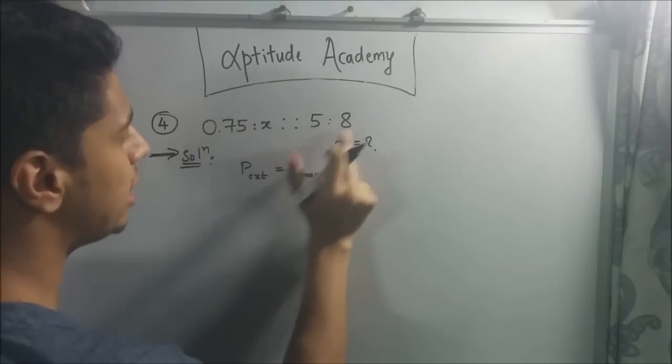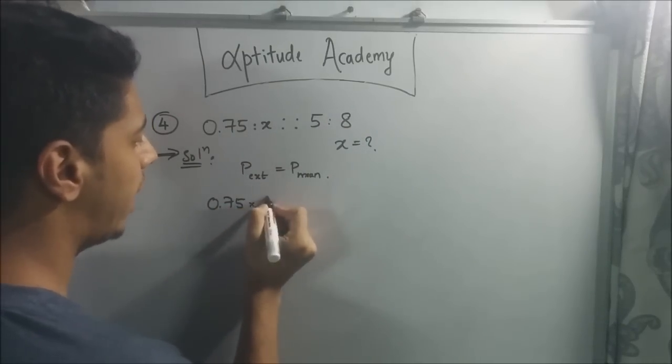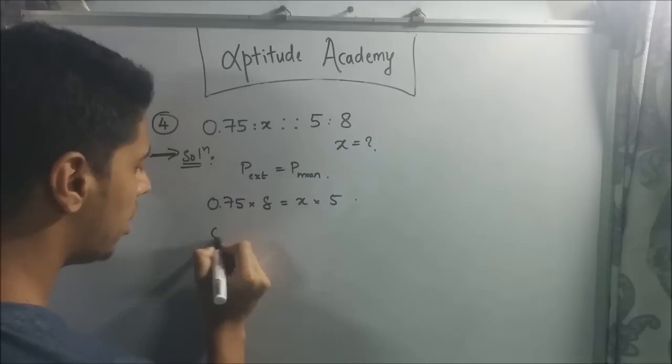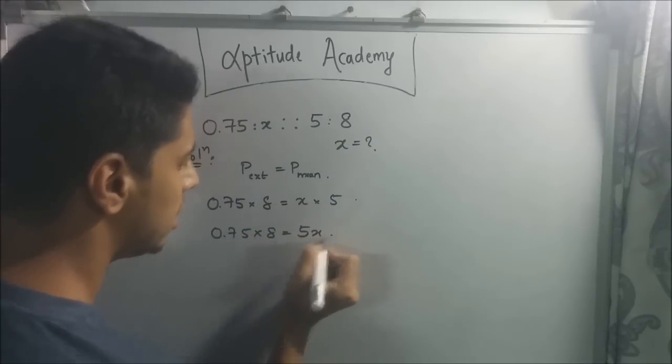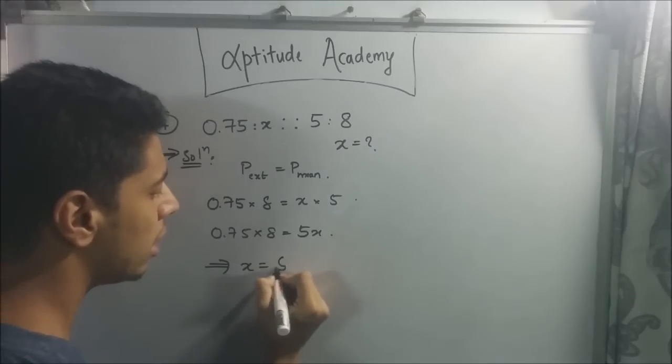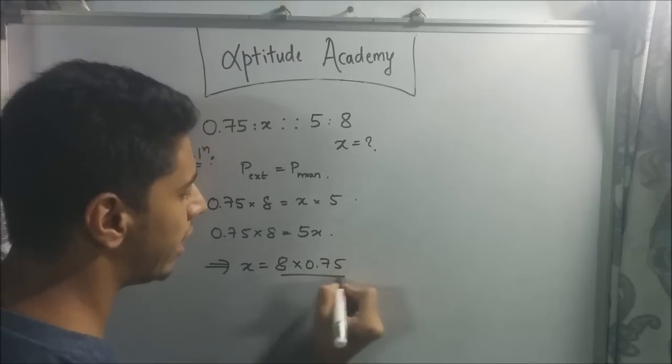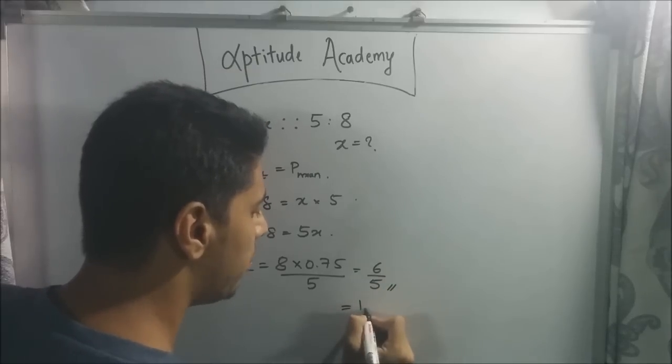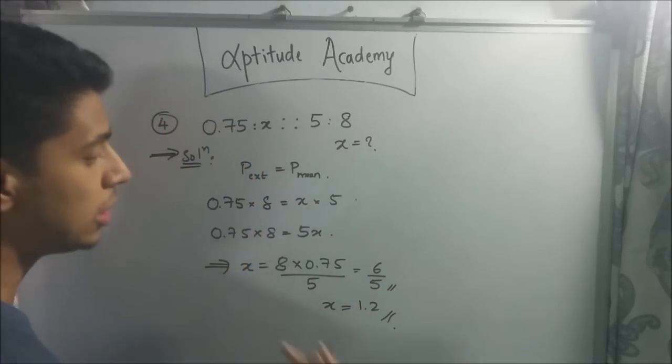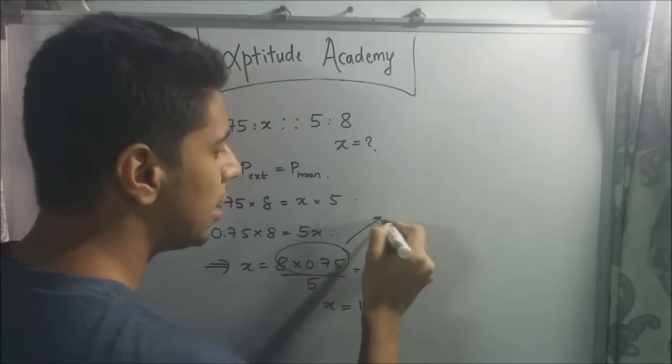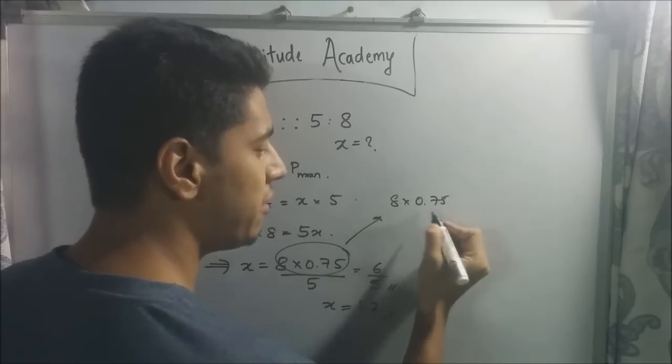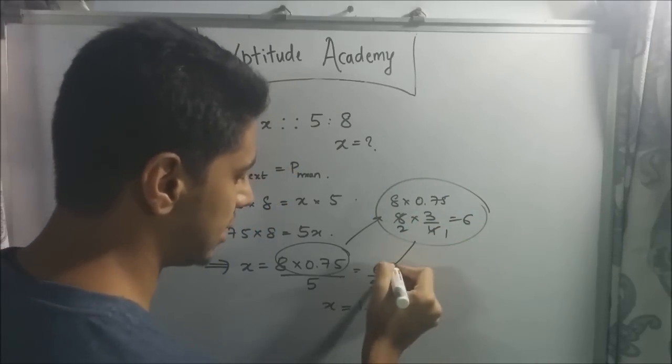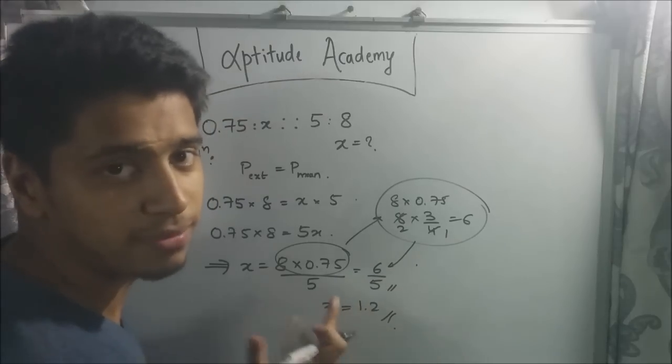The extremes is 0.75 times 8, so 0.75 times 8 equals the product of the means, the inner terms, x times 5. So you have 0.75 times 8 equals 5x. This implies x equals 8 times 0.75 divided by 5. So 8 times 0.75 is 6, so 6 by 5 implies 1.2. So x is 1.2. Just in case you were wondering how I did this so fast, it is 8 times 0.75. 0.75 is 3 by 4, so 4 twos are 2 threes are 6. That's how I got this. 6 by 5, that is 1.2. That is your x.